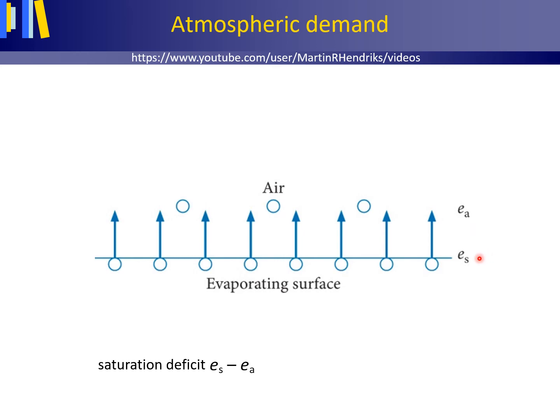ES is the saturation vapor pressure at the evaporating surface in kPa and EA is the actual vapor pressure of the air above the evaporating surface, also in kPa. ES and EA are estimated for the same air temperature.